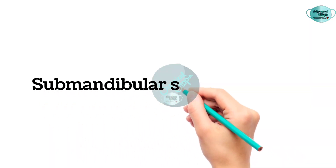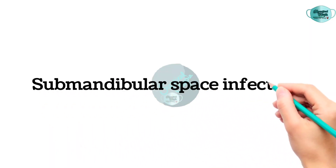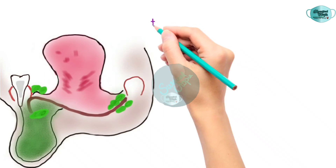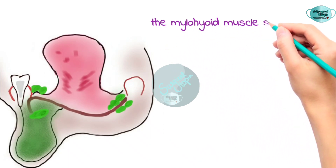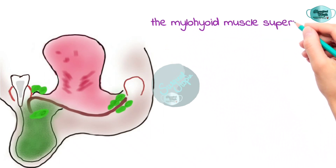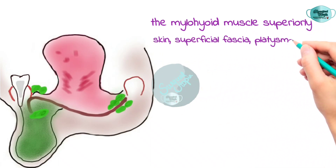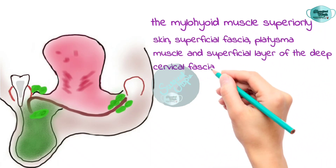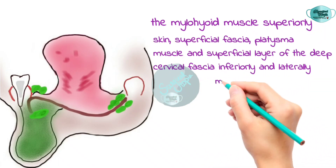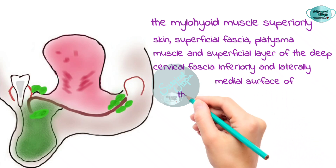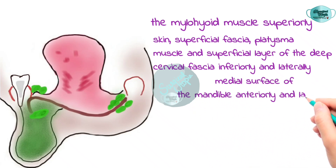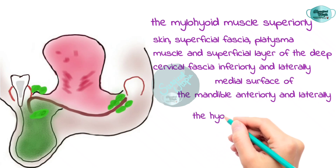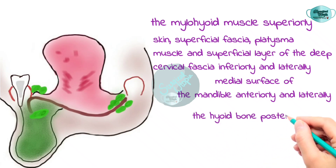In today's video we are going to discuss some mandibular space infections. The submandibular space is bounded by the mylohyoid muscle and inferior border of mandible superiorly, and inferiorly by the anterior and posterior belly of the digastric. Laterally, deep cervical fascia, platysma, superficial fascia along with skin is present. Medially, hyoglossus muscle, styloglossus muscle, and mylohyoid muscle are present.